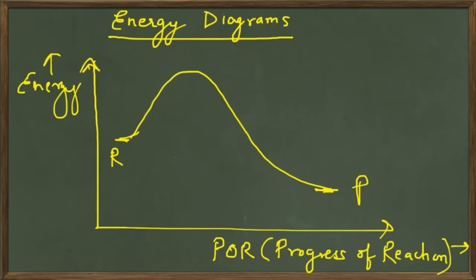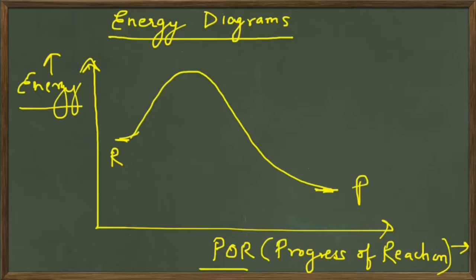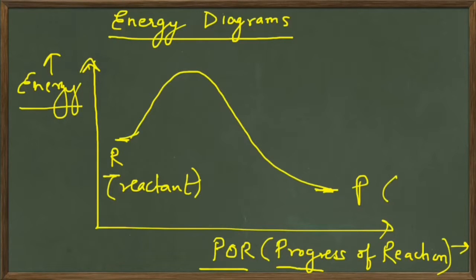In this video we will talk about energy diagrams. In your books you must have seen a figure like this where you have a graph — on the y-axis we have energy, on the x-axis we have P.O.R., which is the short form for progress of reaction, with a curve. On the left end you have the letter R which stands for reactant, and on the right-hand side you have P which stands for product.